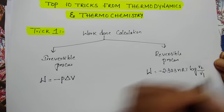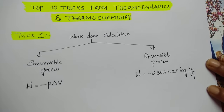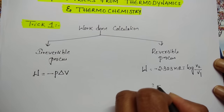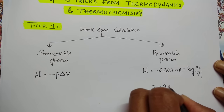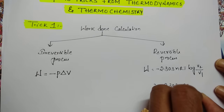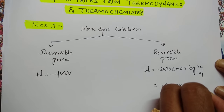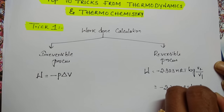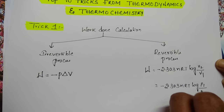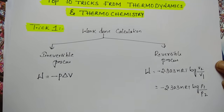As per Boyle's law, volume is inversely proportional to pressure. So we can also write the reversible formula as W = -2.303nRT log(P1/P2), because pressure is inversely proportional to volume.